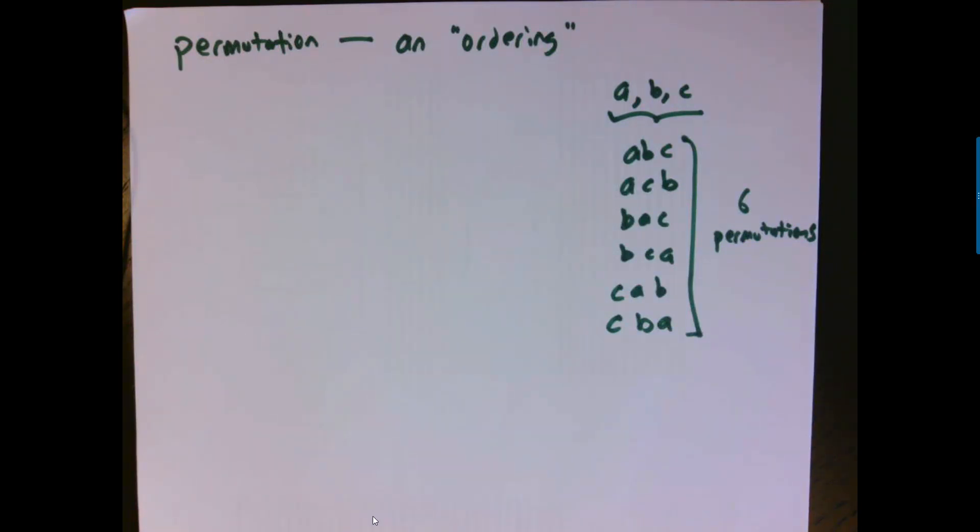If I have ten books and I want to put them on my shelf, I have to choose which one's first and second and third. Whenever you're making that kind of choice, you're putting the things in an order, and so that means you're finding a permutation. There's an equation that tells you how to count the total number of permutations, the total number of orderings for a set of objects.